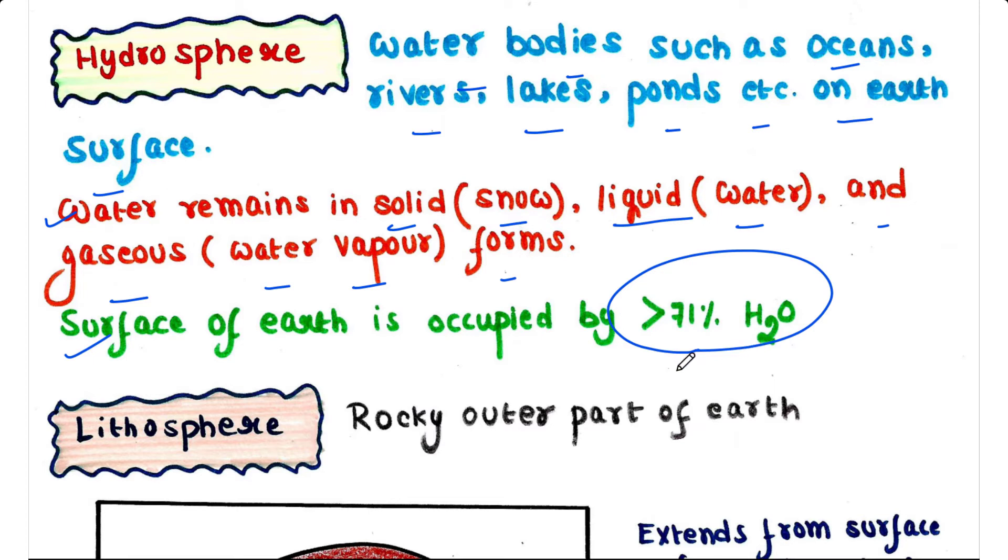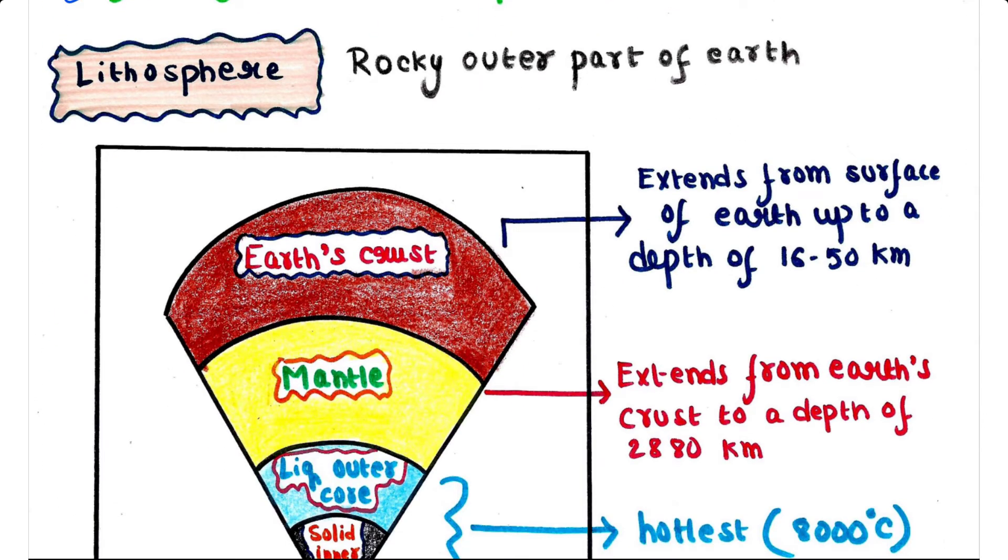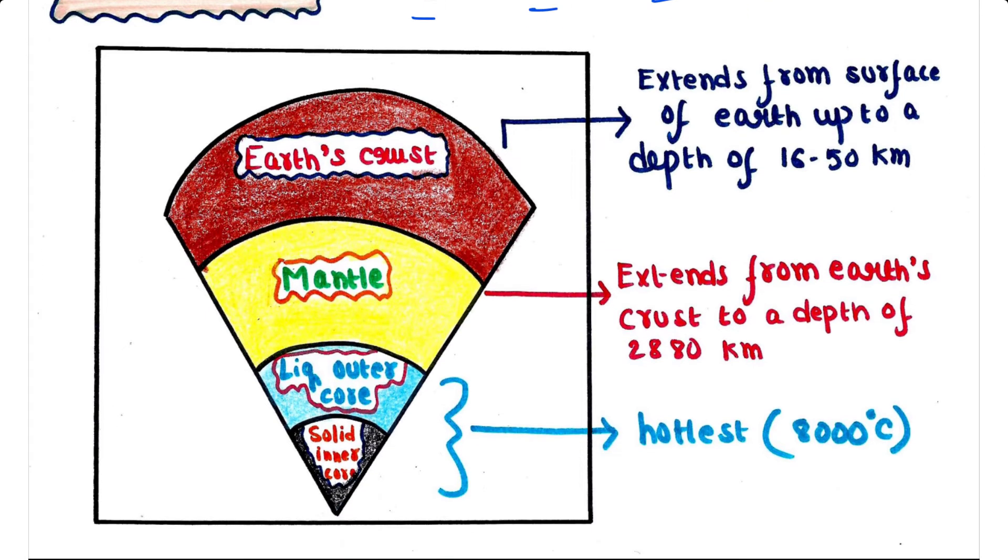Next is lithosphere. Lithosphere is basically the rocky outer part of earth. The earth has three main layers. We will see this picture now. The first layer is the earth's crust, which extends from the surface of the earth up to a depth of 16 to 50 kilometers, and this is a solid layer.